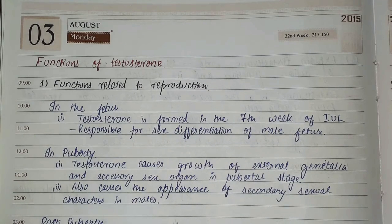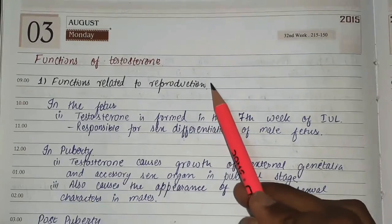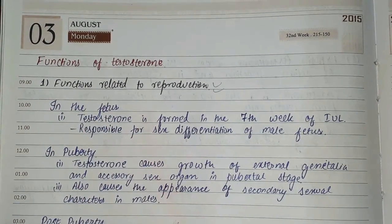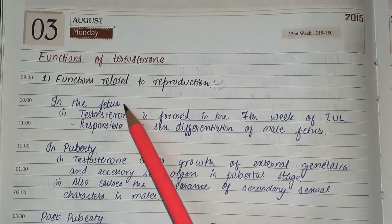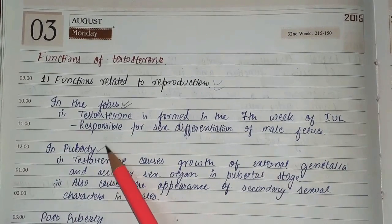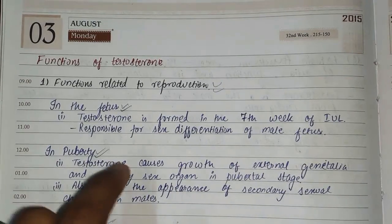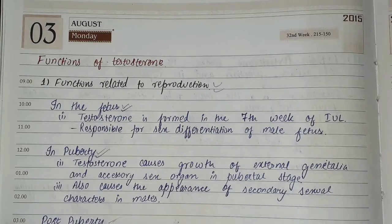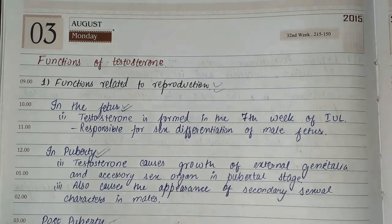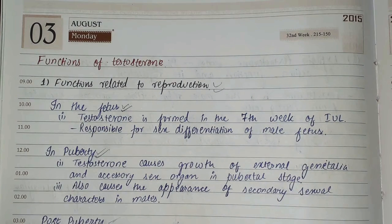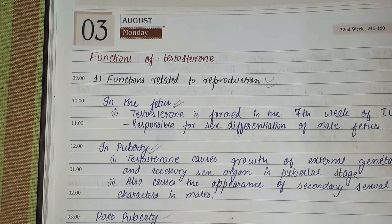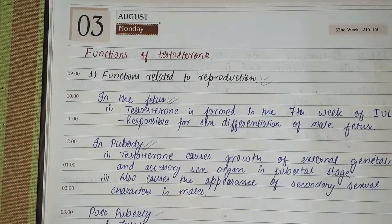Testosterone has two types of functions: reproductive functions and anabolic functions. The reproductive functions are divided into three stages — fetal stage, puberty, and post-puberty. In the fetus, testosterone is formed at the seventh week of intrauterine life and is responsible for sex differentiation of the male fetus. It helps in development of the Wolffian duct, which gives rise to male organs such as epididymis, vas deferens, and seminal vesicles. During puberty, testosterone causes growth of the external genitalia and accessory sex organs.